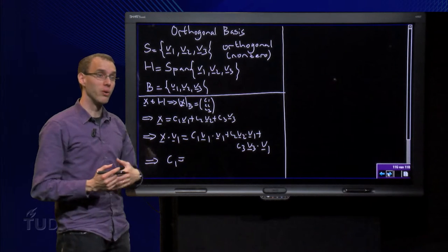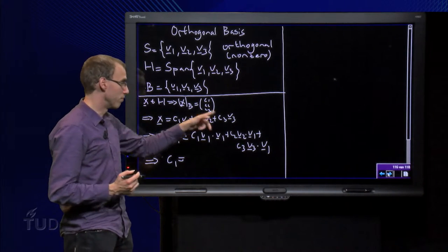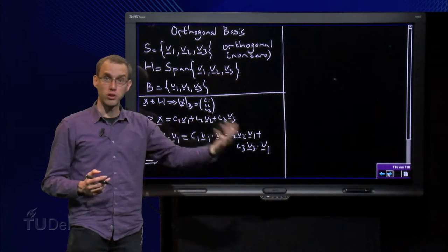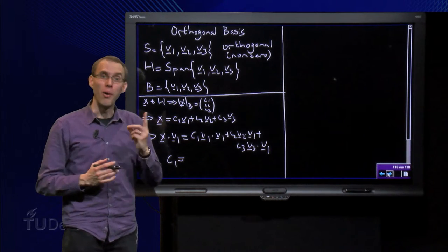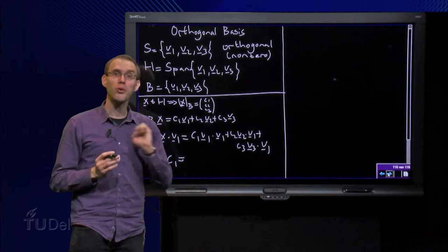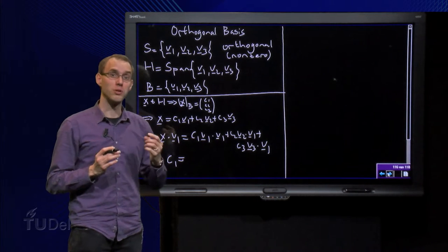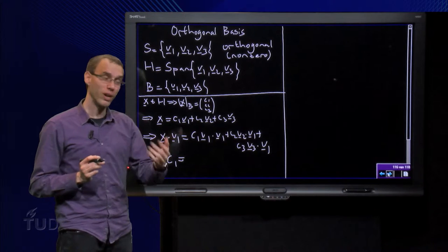Normally when you have x in v1, v2 and v3, you would have to start to do row reduction. You have to make an augmented matrix. However, if you have an orthogonal basis, we can do something smarter.